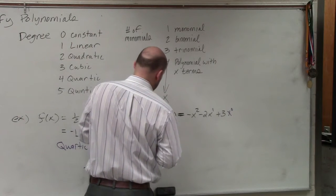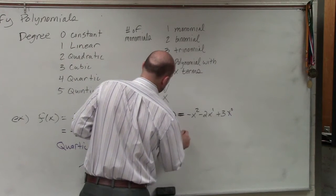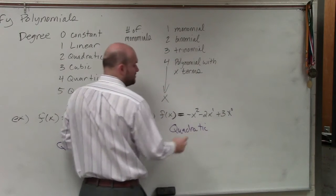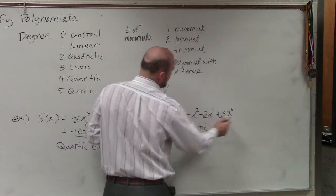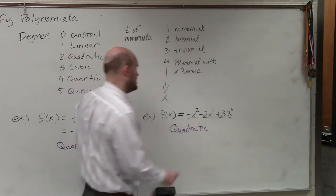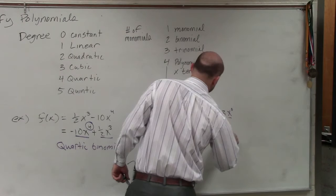So I can just say this is a quadratic, and then I count how many monomials I have, 1, 2, 3. So since I have 3 monomials, it is a trinomial. So that's a quadratic trinomial.